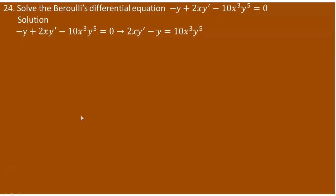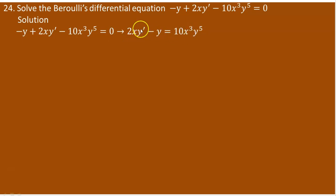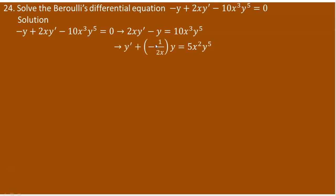So minus y plus 2xy prime minus 10x cubed y to the power of 5 equals 0 can be rewritten: keep 2xy prime and minus y as they are, and move 10x cubed y to the power of 5 to the right side. Since the coefficient of y prime must be 1, divide the whole equation by 2x. Dividing gives y prime minus 1 over 2x, and 10x cubed divided by 2x gives 5x squared y to the power of 5.